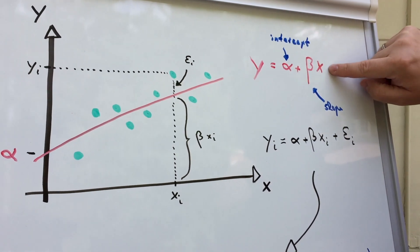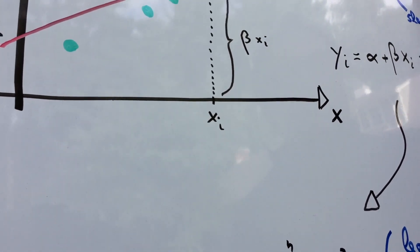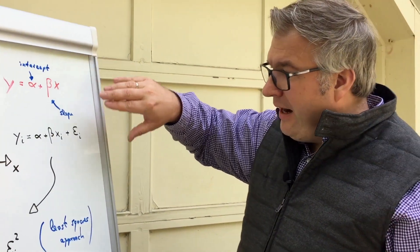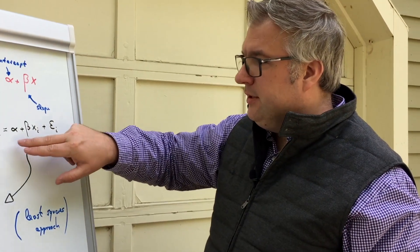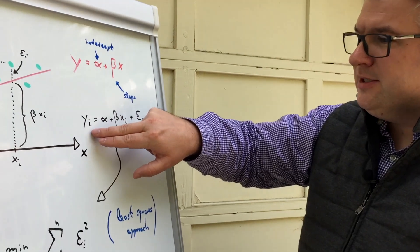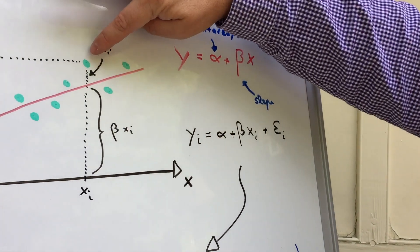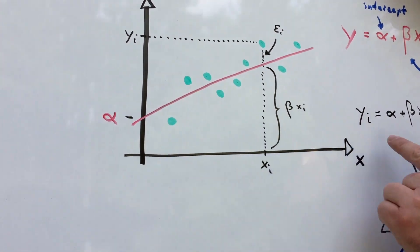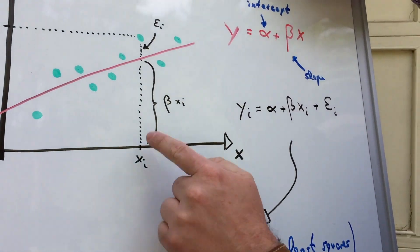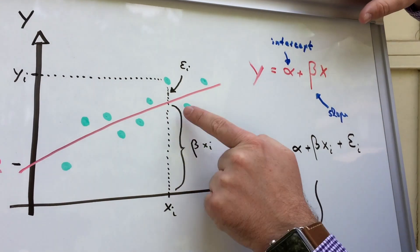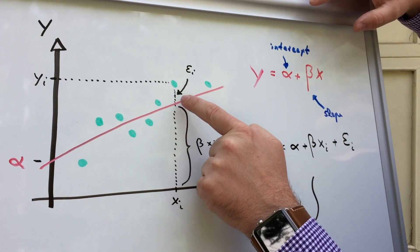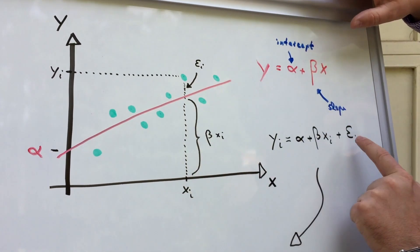Times the value for x. So you probably learned that already like in basic math in school, like many many years ago. For every single data point, you can make the following calculations. So you can basically calculate the value yi, so this value here, with the same formula alpha plus the slope beta times xi, the corresponding value.